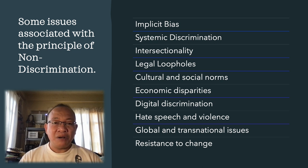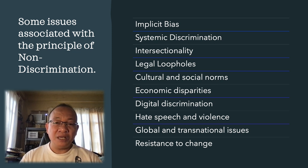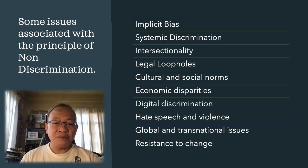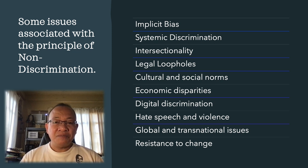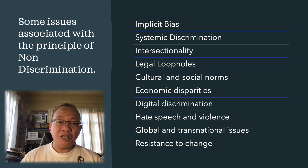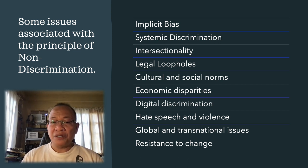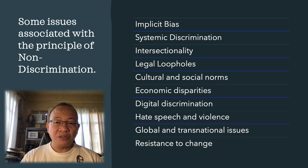The second issue is systemic discrimination. Discriminatory practices can be embedded within social, economic, and political systems, perpetuating inequality over time. This system may disadvantage certain groups such as racial minorities, women, LGBTQI+ individuals, or people with disabilities. The third one is intersectionality. Individuals often face multiple forms of discrimination that intersect with one another. For example, a woman of color may experience discrimination based on both race and gender, which can compound the challenges she faces.